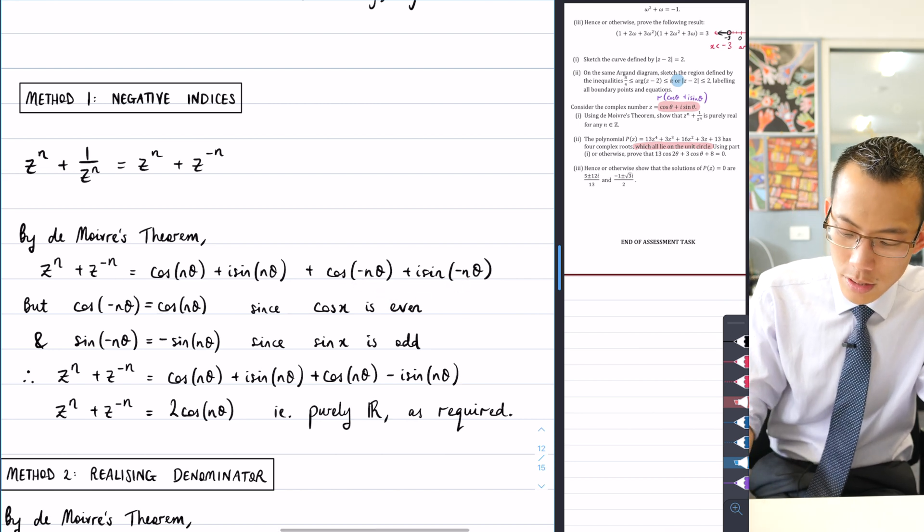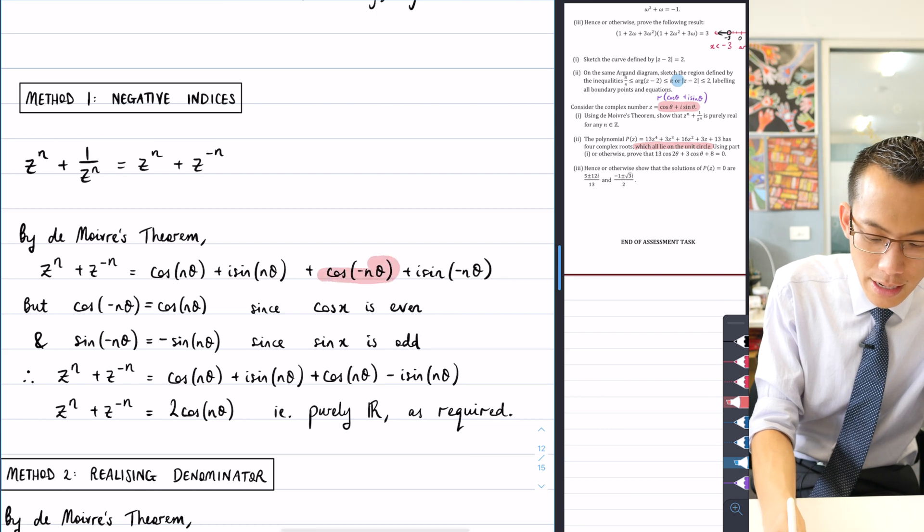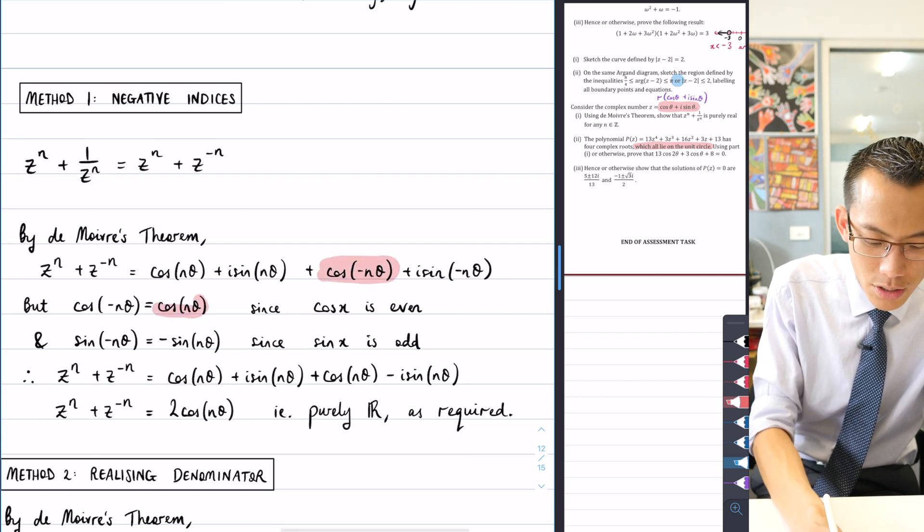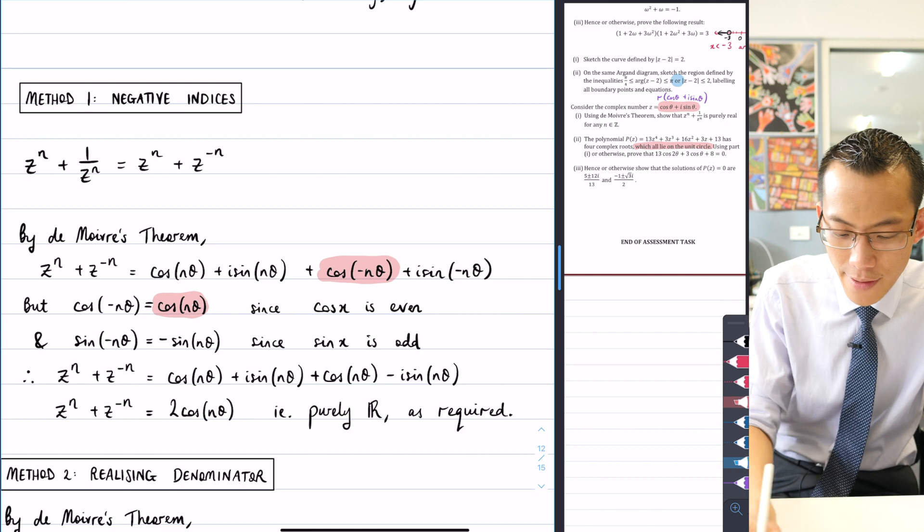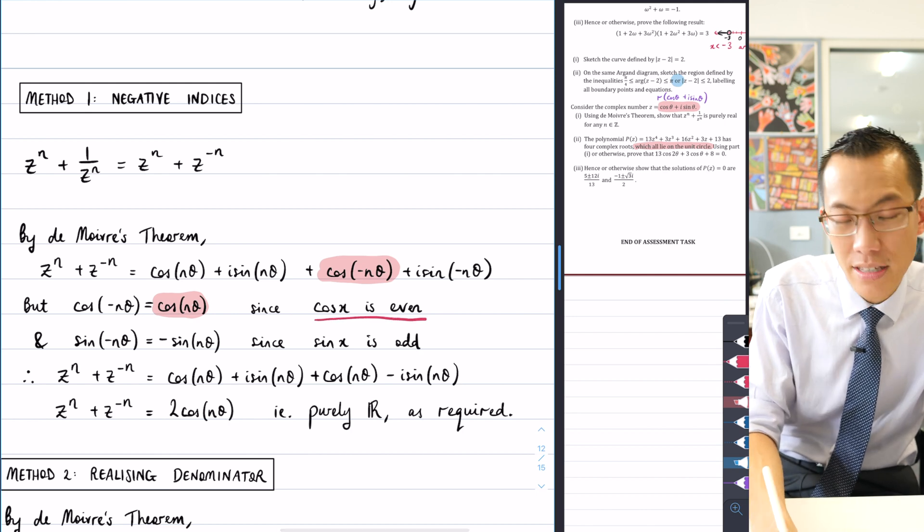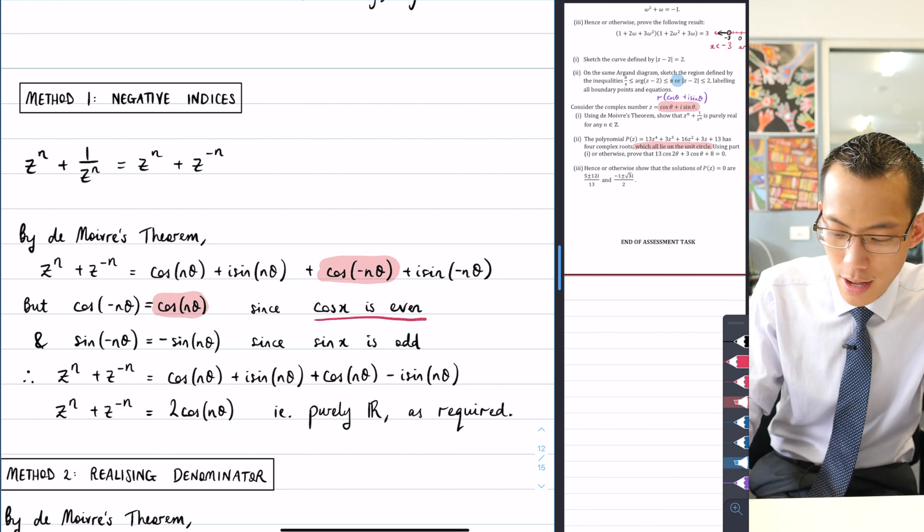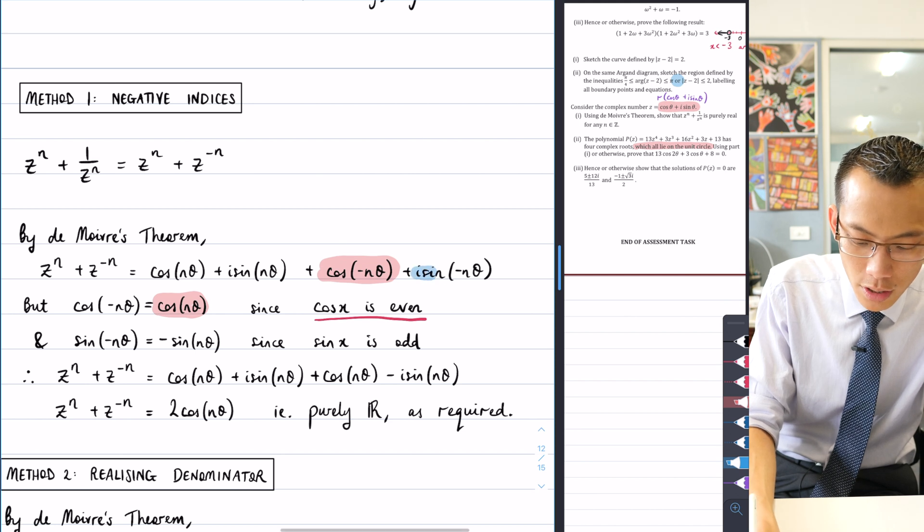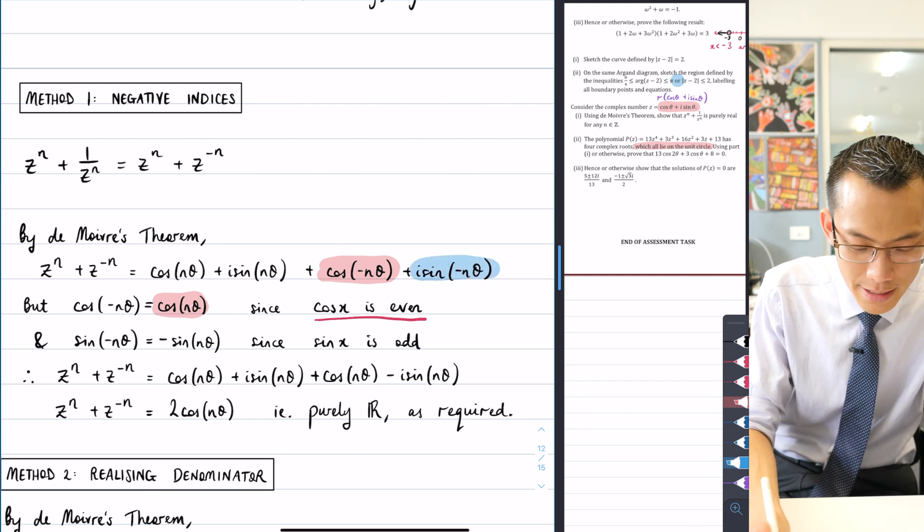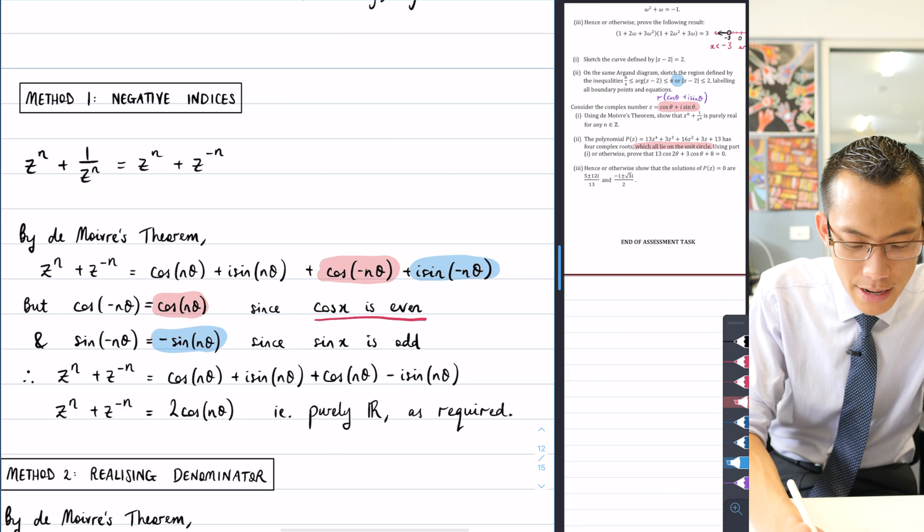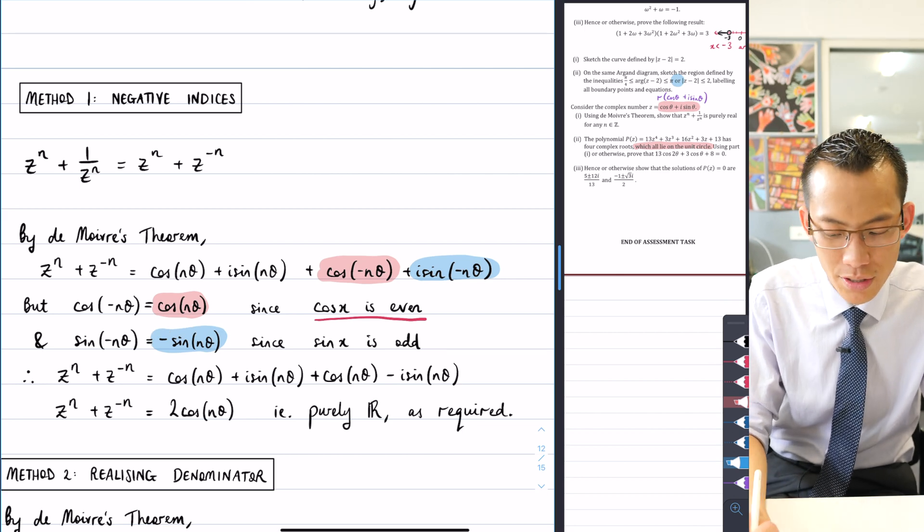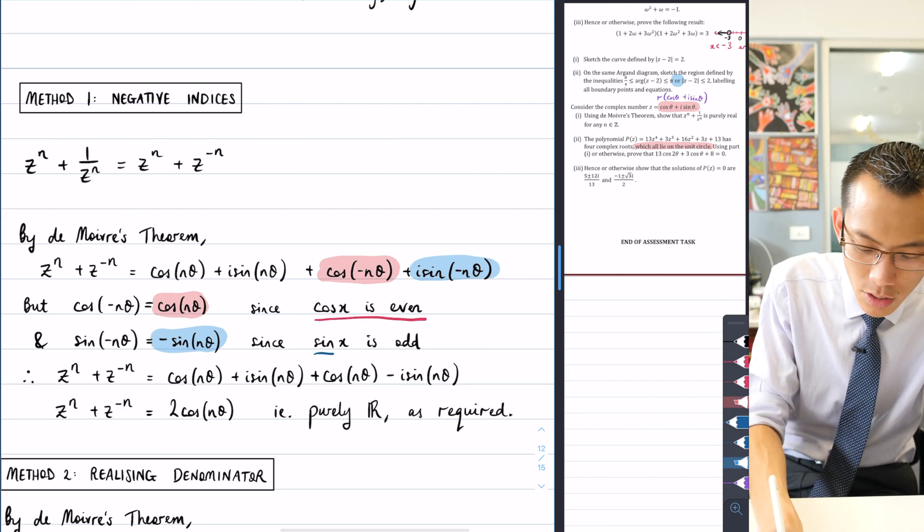So you can see that negative n there happening twice. And then what I can say is okay well let's look at this carefully right, cos of negative n theta that's the same as cos n theta, and crucially I gave a reason for it. That's because cos x is an even function and I make the same argument here that you've got this i sine minus n theta which is the same as minus sine n theta, but not because I say so, it's because sine x is an odd function.